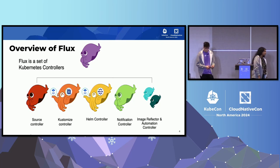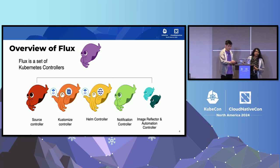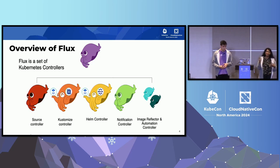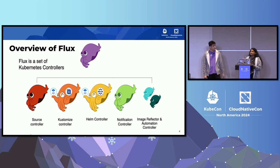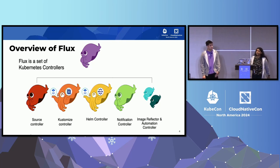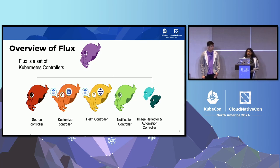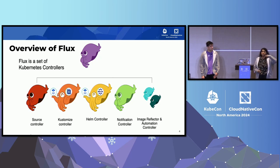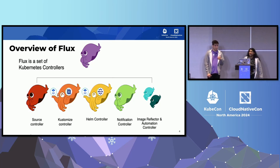Don't be confused by the Kustomize controller — it's named so because it uses Kustomize in the backend. If you have a kustomization.yaml in your file path, it will apply what it finds there. If it doesn't, it will recursively search that file path for any YAMLs and create a kustomization YAML to apply. The notification controller allows inbound and outbound traffic. One neat thing is having Git send a webhook to tell the source controller, 'a change has been made — don't wait the sync interval, go apply it right now.'